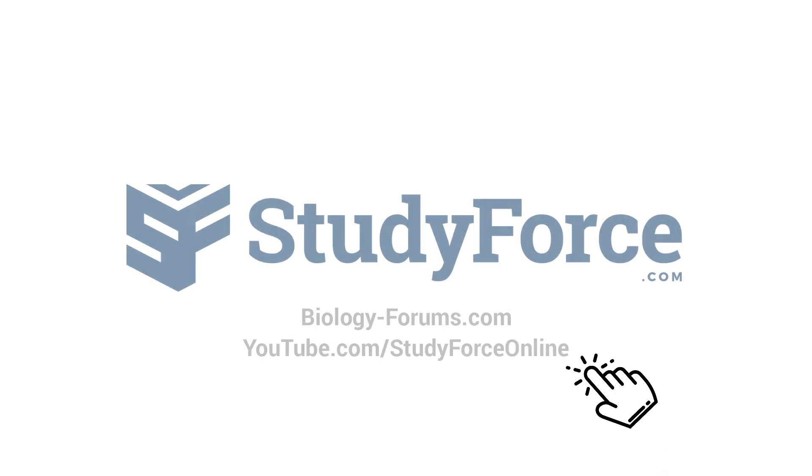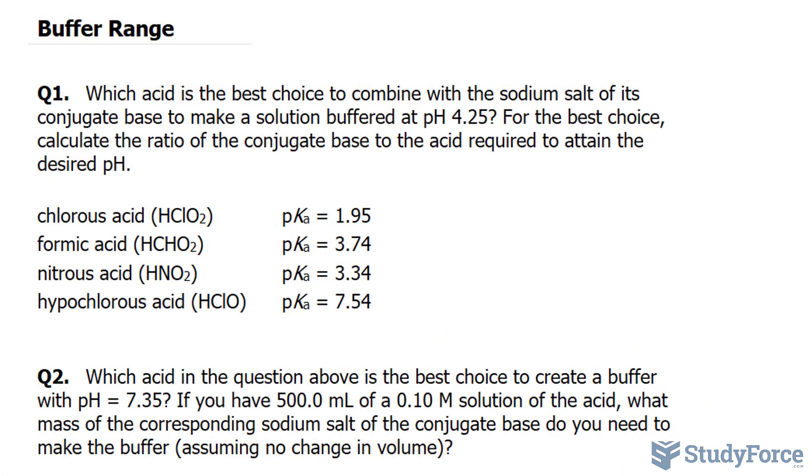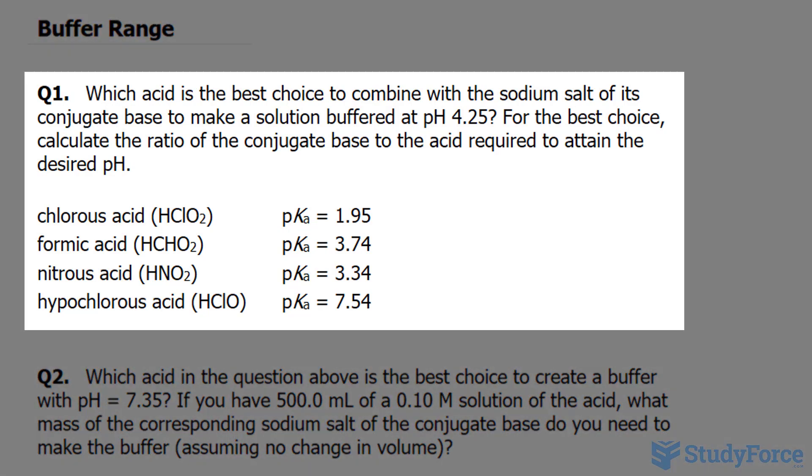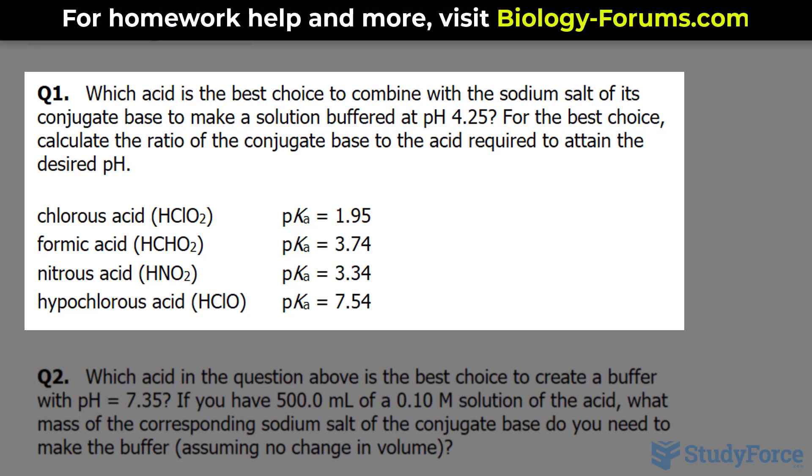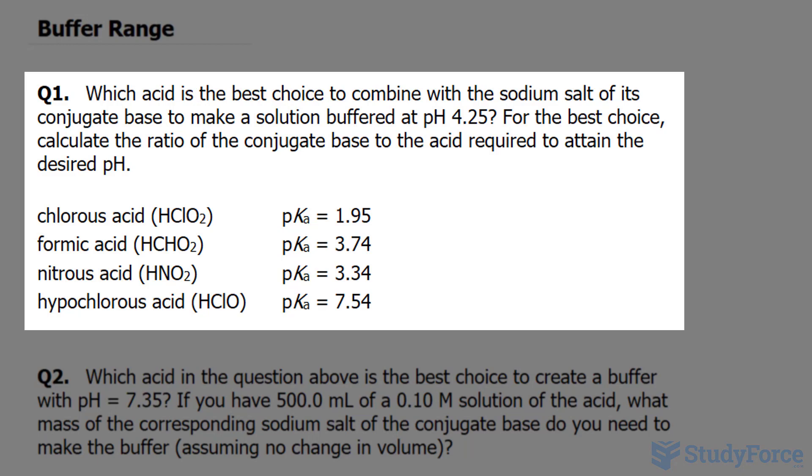In this lesson we'll go through two examples related to buffer range. Question one reads: which acid is the best choice to combine with sodium salt of its conjugate base to make a solution buffered at pH of 4.25? For the best choice, calculate the ratio of the conjugate base to the acid required to attain the desired pH.